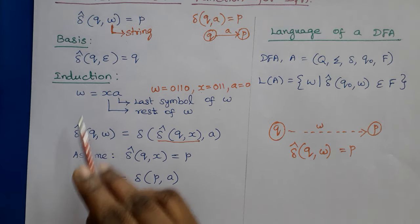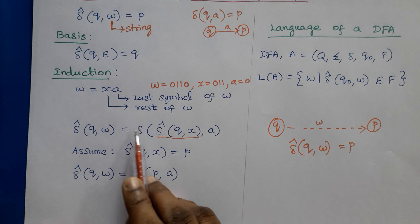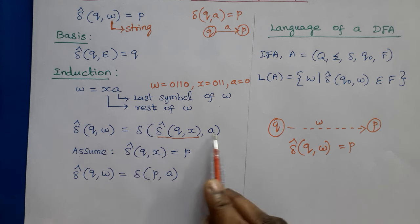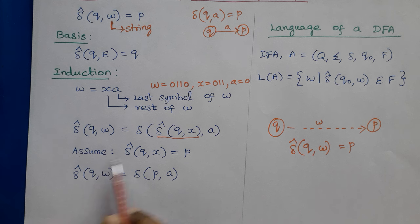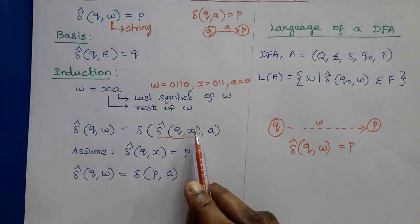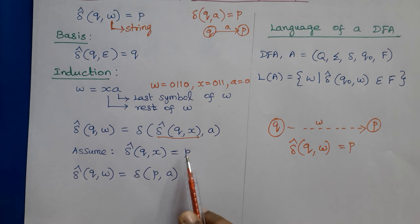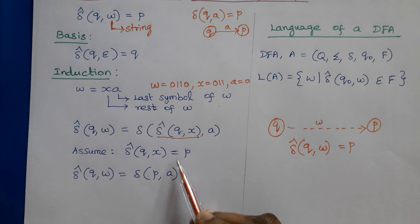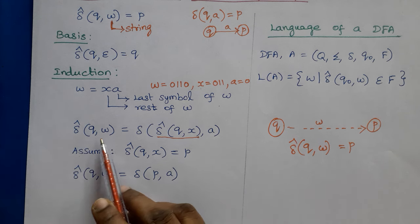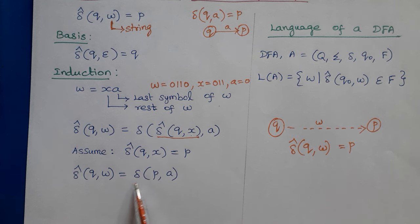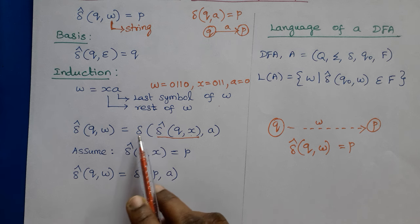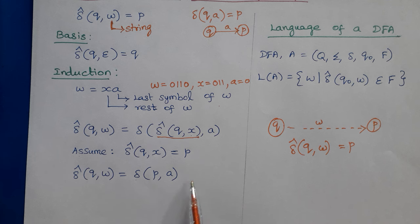If we want to find delta-cap(Q, W), since W can be written in the form of XA, we first find delta-cap(Q, X). Assume delta-cap(Q, X) = P — that is, after reading all symbols of X, we are in state P. Then delta-cap(Q, W) = delta(P, A). So to find delta-cap(Q, W), first find delta-cap(Q, X) recursively, then apply the transition function delta(P, A) to get the final output state.